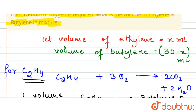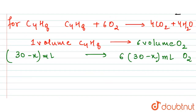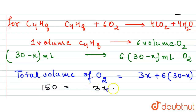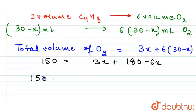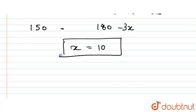Now, it is given that burning 30 ml of the mixture requires 150 ml of oxygen. So the total volume of O₂ equals 3x + 6(30 − x) = 150, which gives 3x + 180 − 6x = 150, so 180 − 3x = 150, and therefore x = 10.